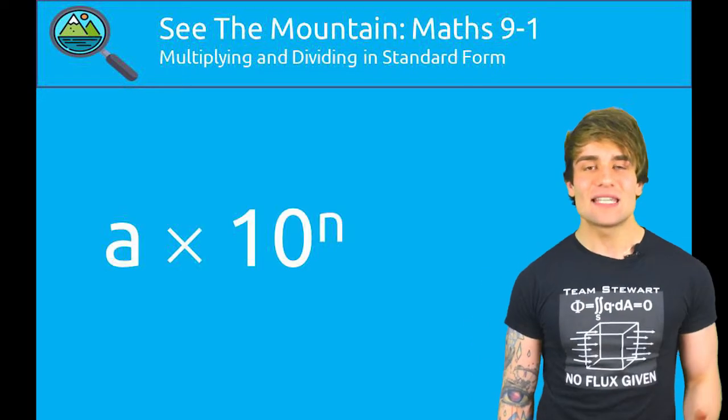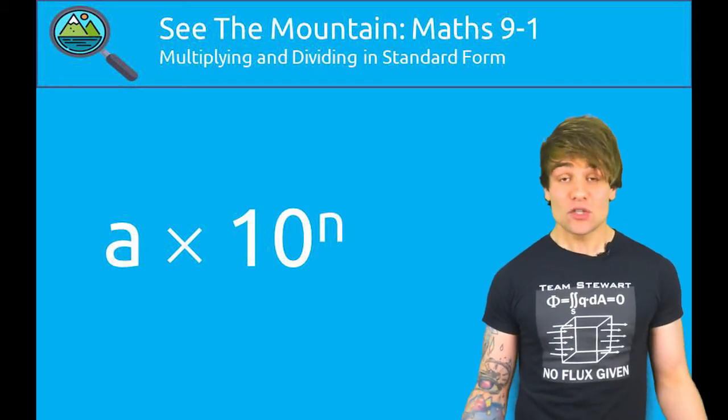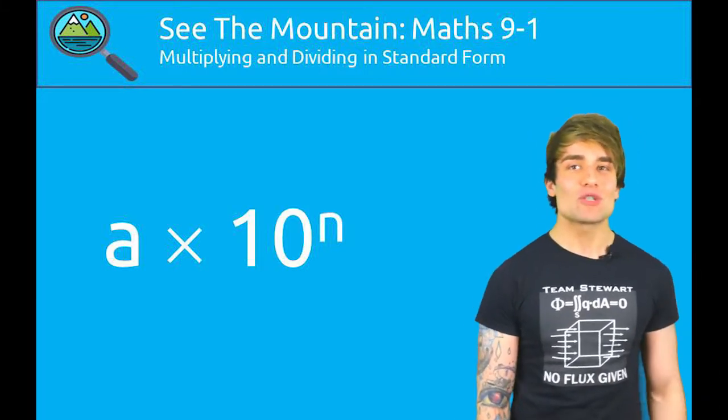Just to the right of me, you can see the way Greg expressed it with a is any number between 1 and 10, and n could be literally any number, positive or negative, depending on whether it's a large number or a small number.